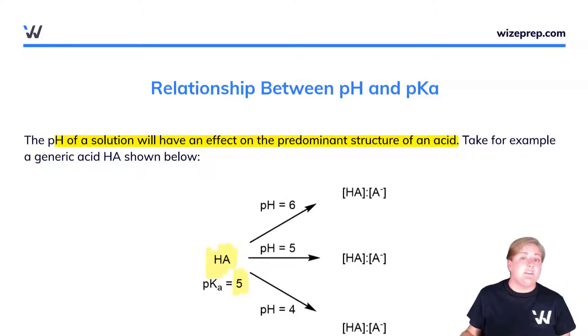under what type of conditions will I have more HA? And under what type of conditions will I have more A-?